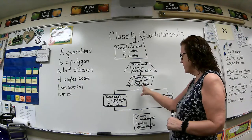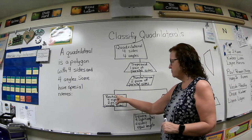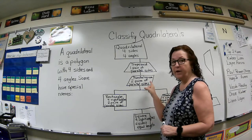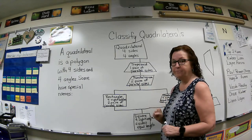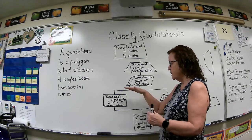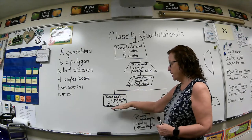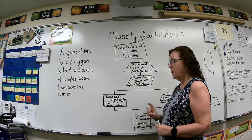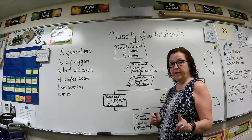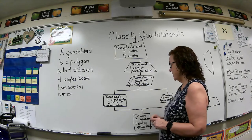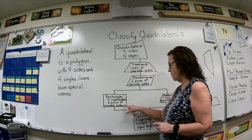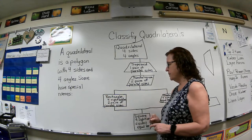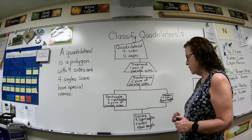Coming down off of that, we have a rectangle. A rectangle is also a parallelogram because it has two pairs of parallel sides. But what makes a rectangle unique is it has four right angles. So that's our rectangle.